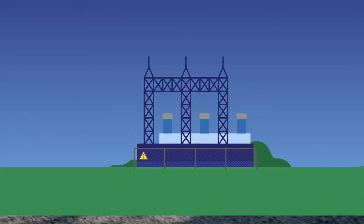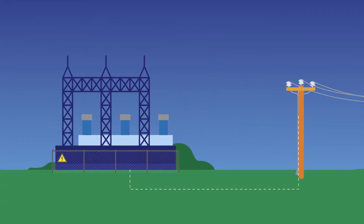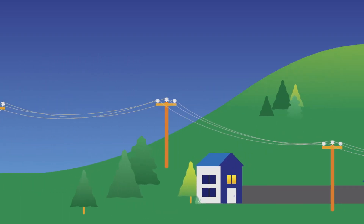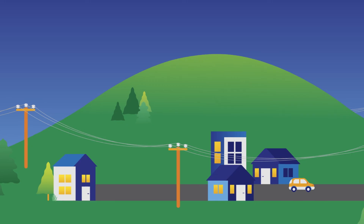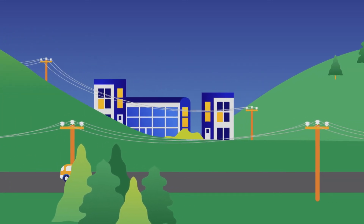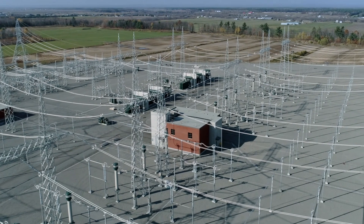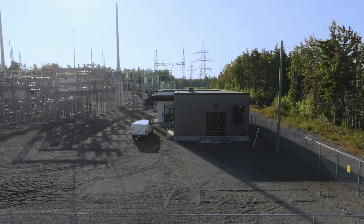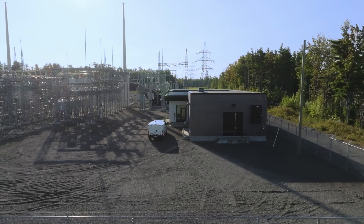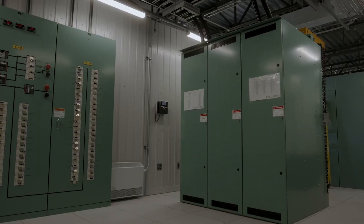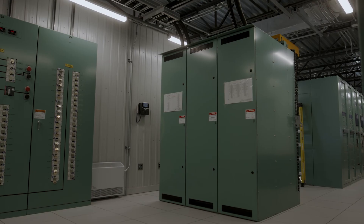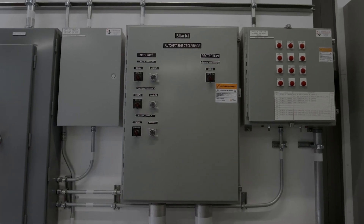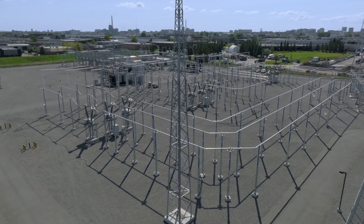At the last substation in the transmission system, electricity leaves through underground or overhead cables. That's the final stop before power is distributed to various neighbourhoods. To make sure Hydro-Quebec can monitor and coordinate everything that happens in the substation, all the equipment is connected to a control and protection system housed in a control building. Most of the time, the operations are automated and carried out remotely, which is why it often seems like substations are empty.